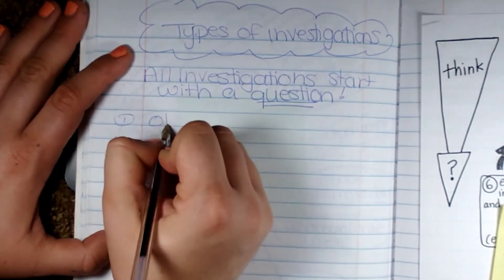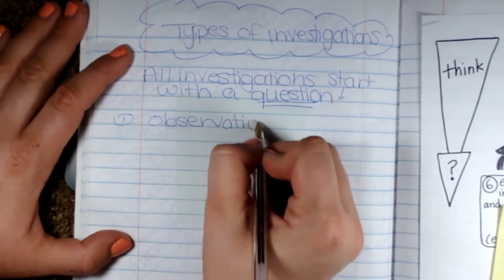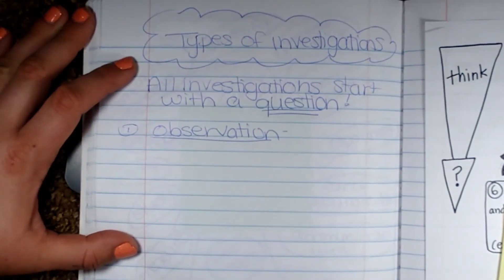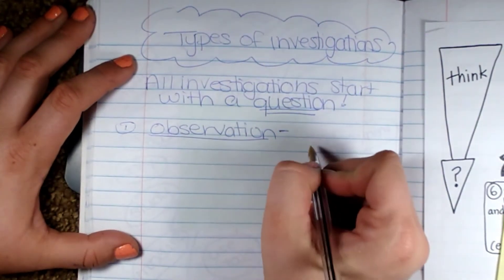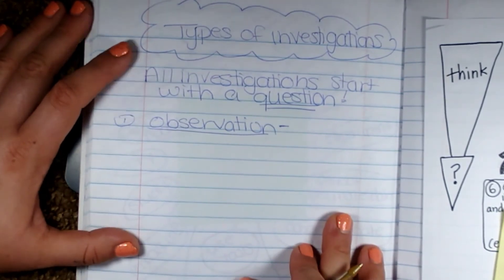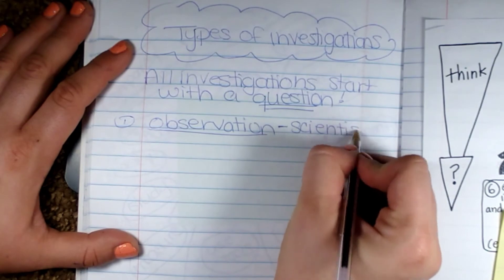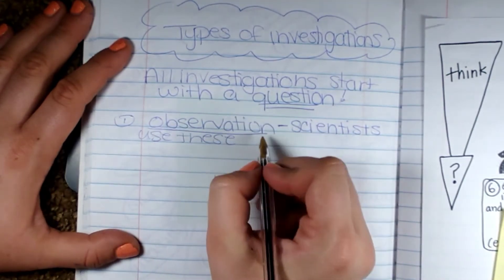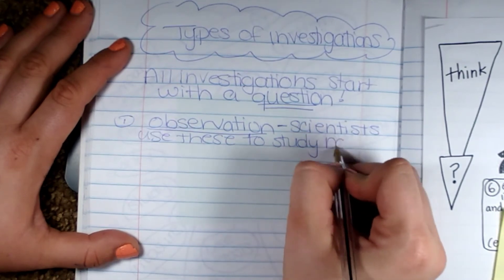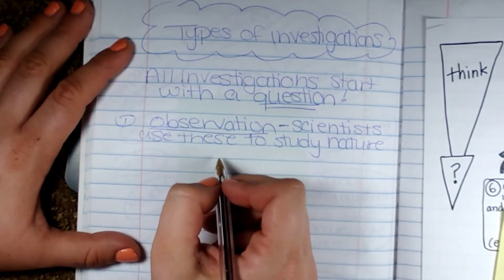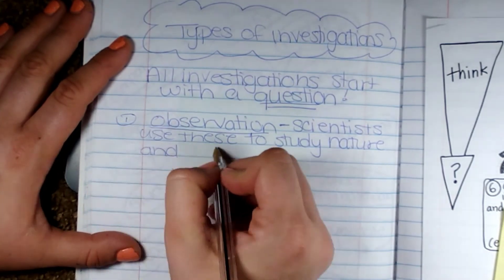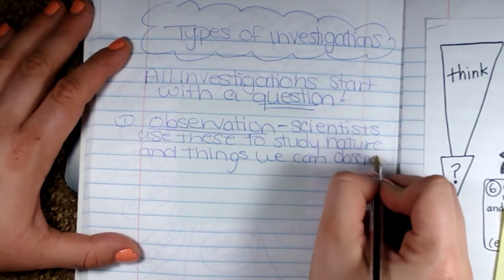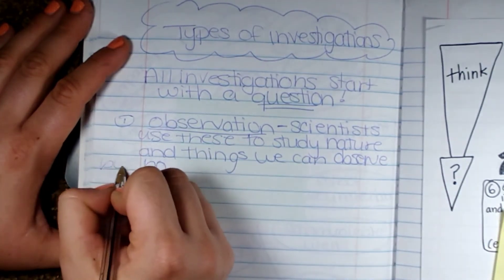The first one is observation. Last Friday we did an observation — not an experiment. We didn't test anything. We did an observation on our bean sprout, and are continuing to. We did not manipulate anything; we just put our beans in the bag and we're going to watch what happens. Scientists use these to study nature and things we cannot control — things we can observe but not control.